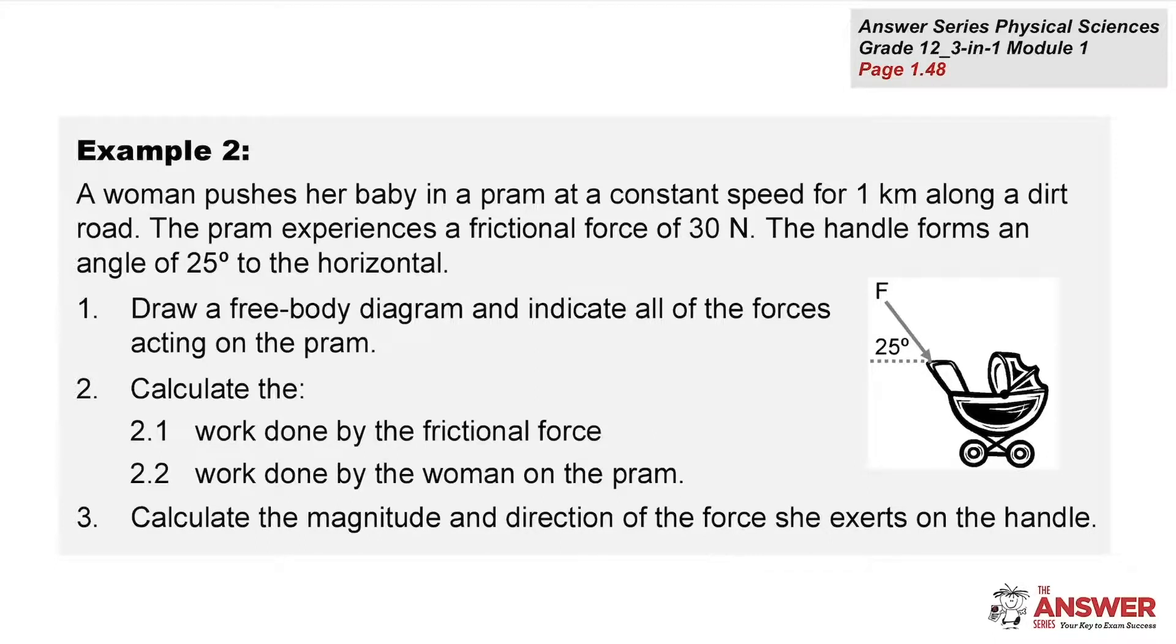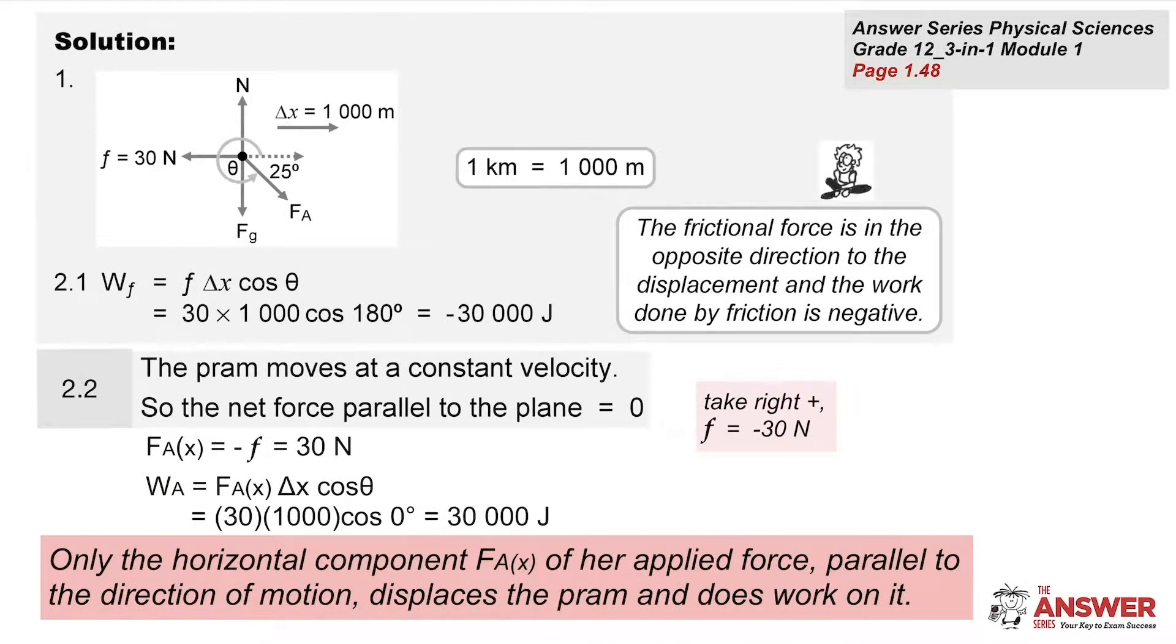In example two, a woman pushes her baby in a pram for one kilometer. Again, think about the force vectors acting on this pram. Gravitational force is downwards, a larger normal force is upwards because the applied force is also acting downwards, and then there's a frictional force backwards. There's the force diagram with the delta x shown. We have to do a conversion: one kilometer is 1000 meters. Now we start to work out the work done by the friction. The frictional force itself is 30 newtons, the magnitude goes in there. The delta x is 1000 meters. The angle between these two vectors is 180 degrees because they're going in opposite directions, and so out comes an answer of minus 30,000 joules.